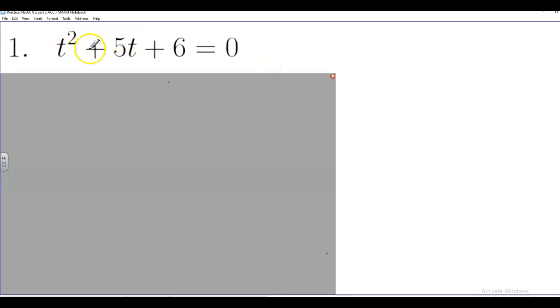So here's the first one right here, t squared plus 5t plus 6 equals 0. It's a quadratic because we have a constant added to a variable expression, t, and then added to that variable expression squared.